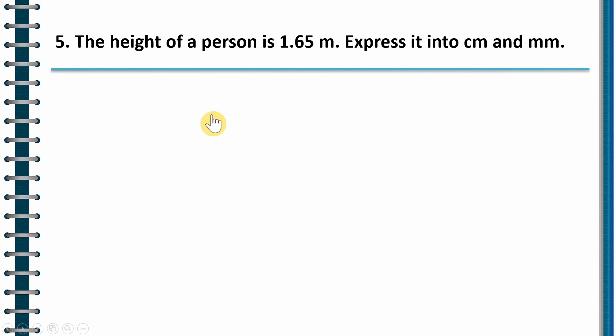Fifth question: The height of a person is 1.65 meter. Express it in centimeter and millimeter. Now this we have to solve. So let us solve this first and then we will check the answer. So 1.65 meter into centimeter. How do we do? 1 meter is 100 centimeter. So we multiply it with 100.